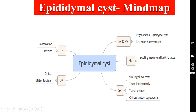What are the symptoms or history? There will be a swelling in the scrotum as if the patient is having a third testis — that is the main complaint. Coming to the signs, you can feel the swelling above the testis, just above the testis as if there is a third testis there, and the testis is felt separately. The swelling is transilluminant, and if it is an epididymal cyst, it has a characteristic Chinese lantern appearance. If it is a spermatocele, the swelling is not transilluminant because it contains sperm, giving what is called a barley water-like content inside the spermatocele.